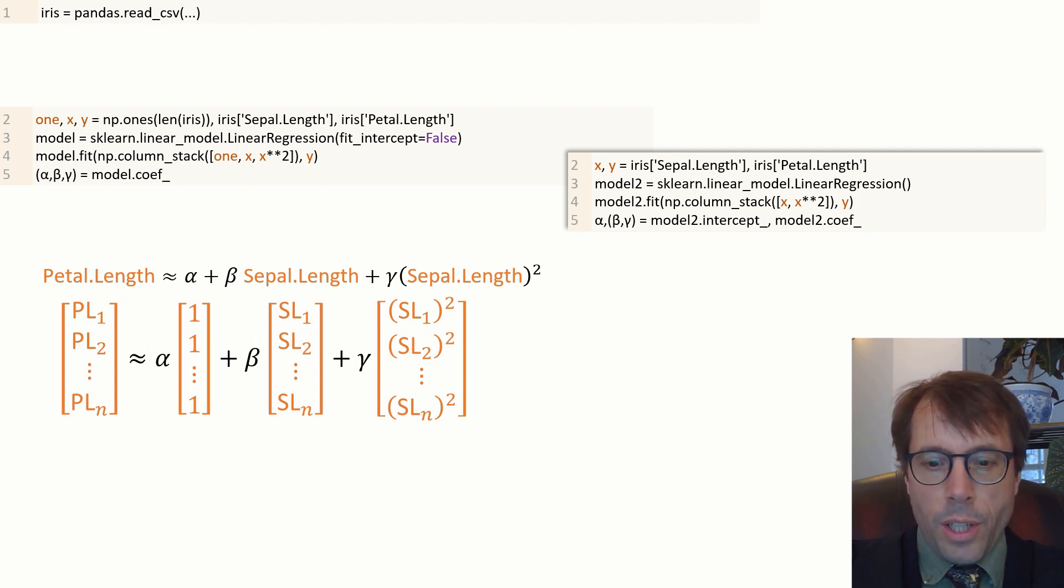Then we call the model fit command, and we don't need to include one. Then we can get out the parameters, and to get out the parameter for the one feature vector, we call model.intercept, and to get out the other parameters, the parameters we explicitly told it about, we call model.coef.